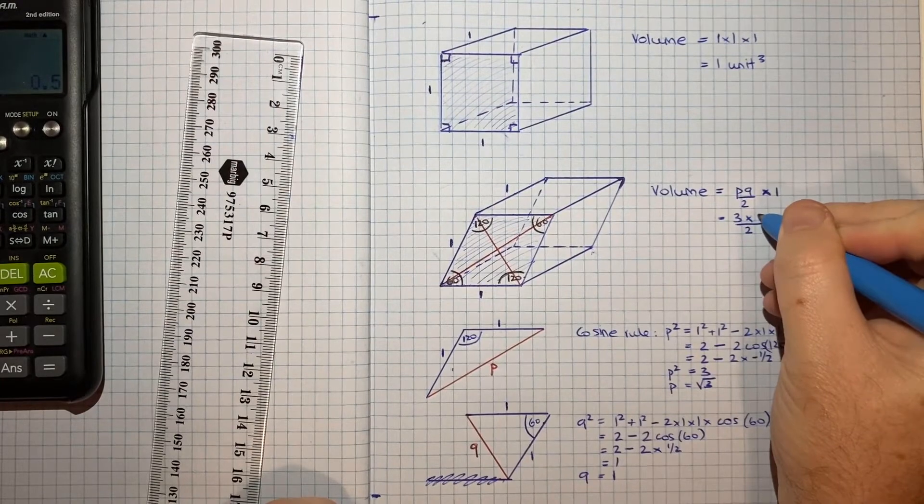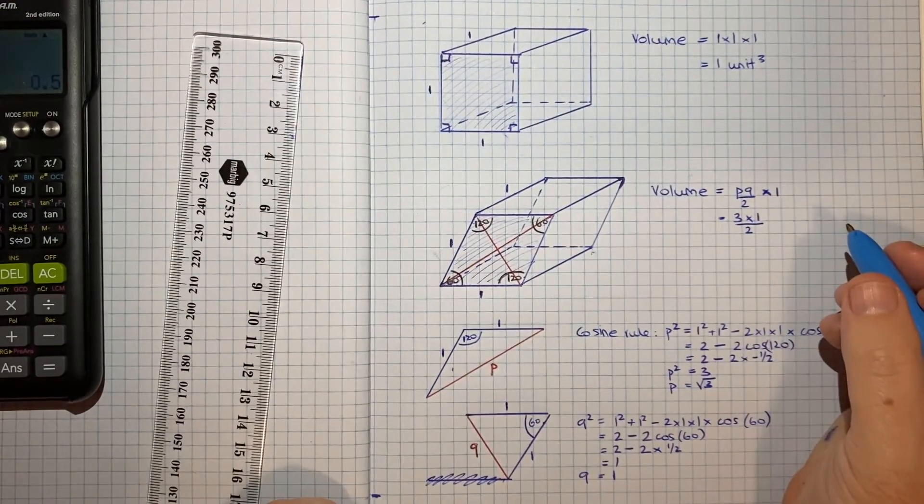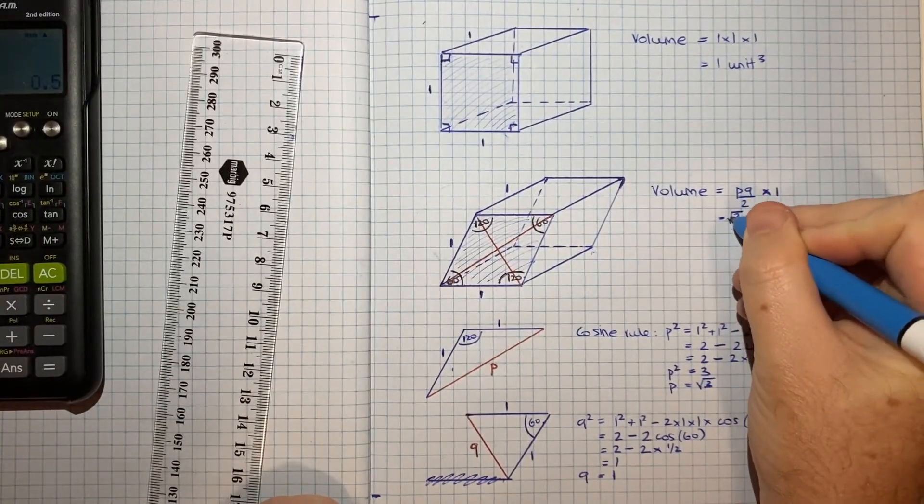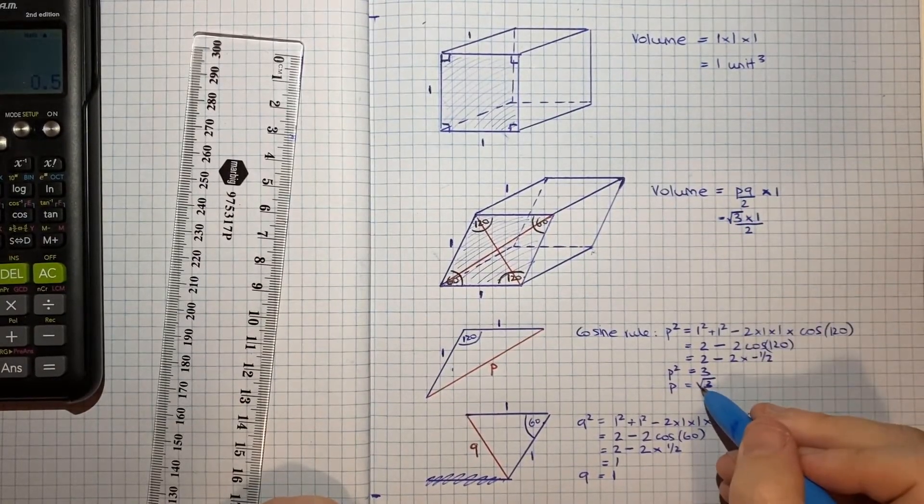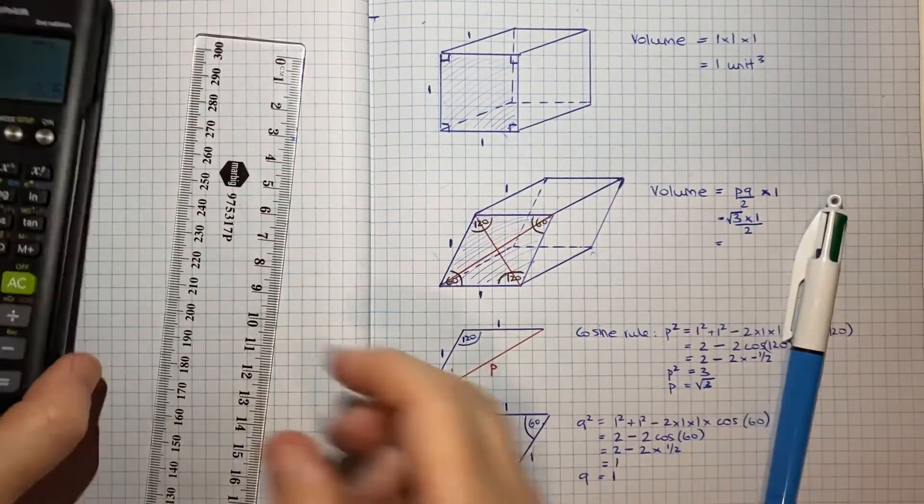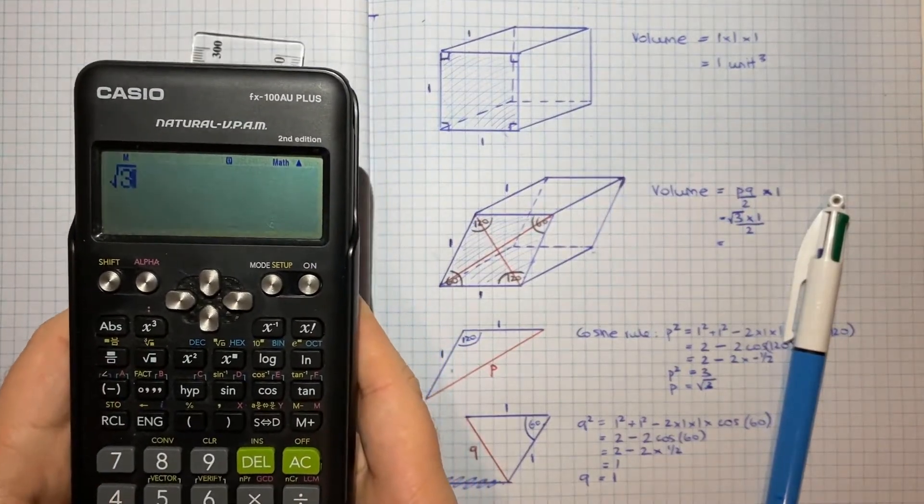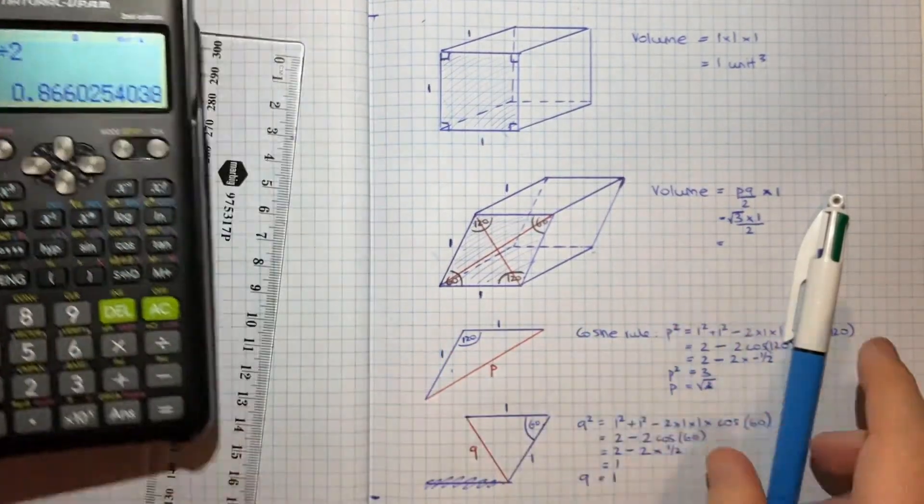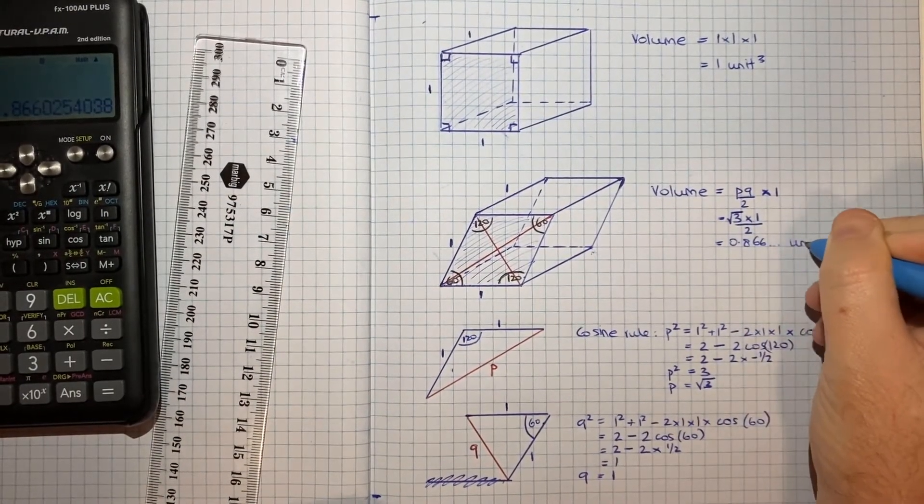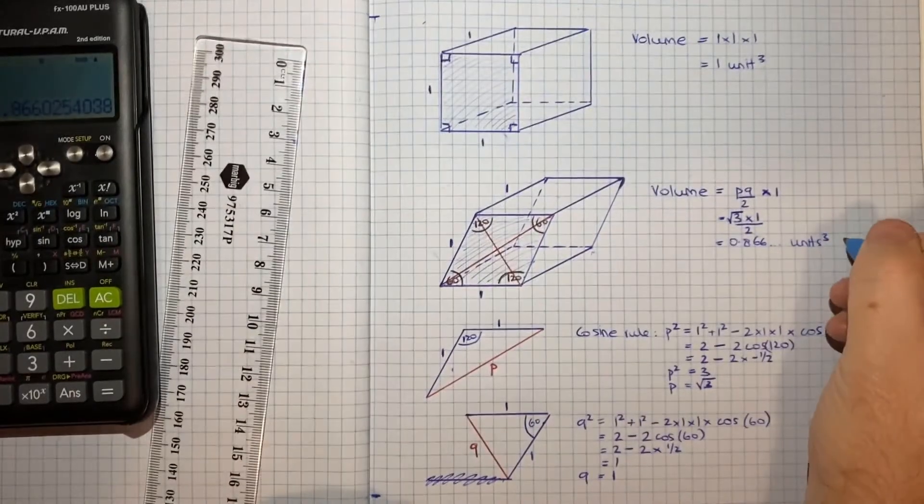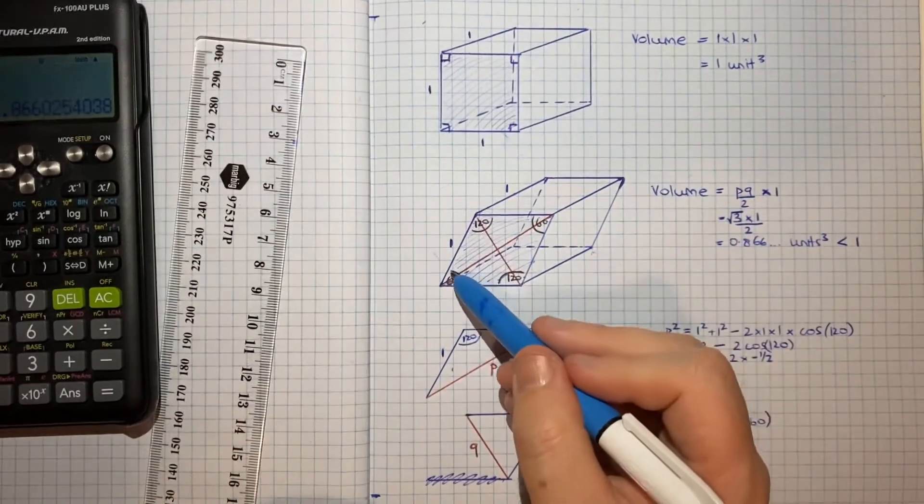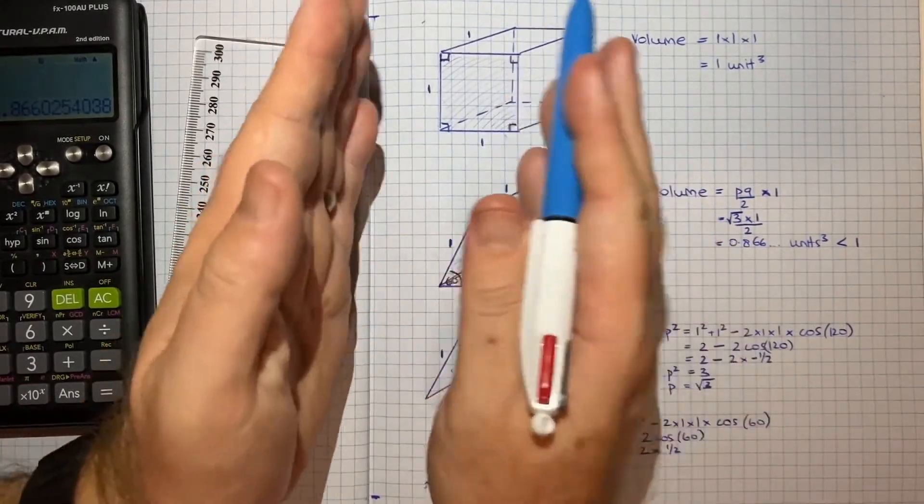So root 3 times 1 on 2. Sorry, the square root of 3 is P. So P is root 3 times 1 on 2 or root 3 on 2. So what's that? Square root of 3 divided by 2, 0.866 and so on units cubed. And that is less than the 1 unit cubed that we had here.